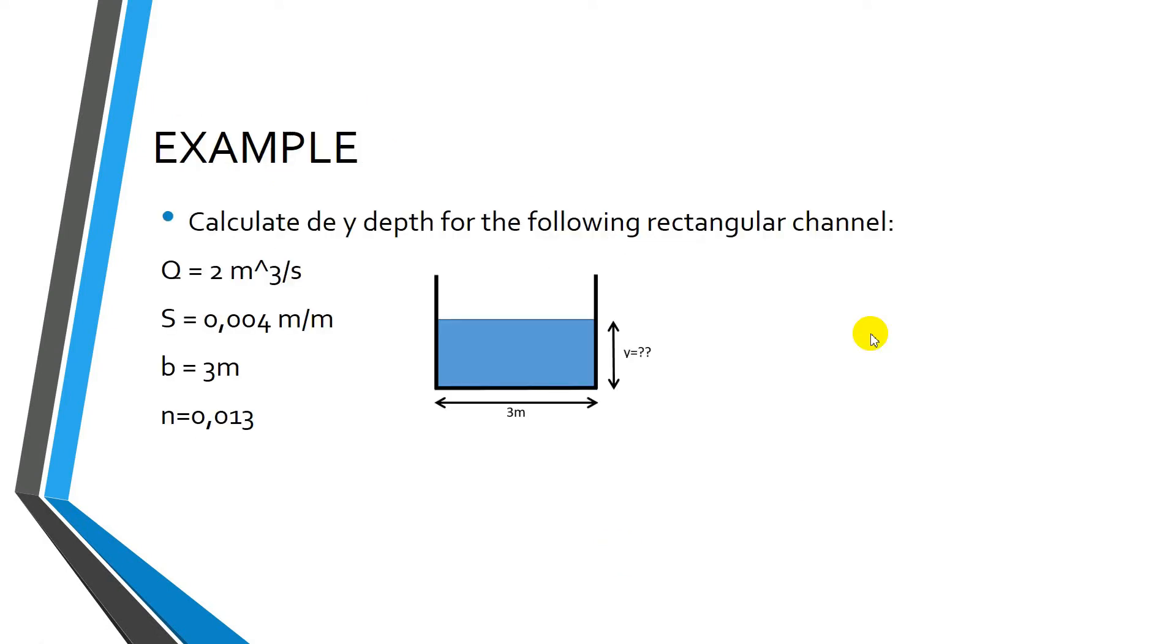Now, we will solve an example. We need to calculate the wide depth for the following rectangular channel, and we have the following information. We have discharge of 2 cubic meters per second, and a certain slope. B is the width of the channel, and n is the roughness coefficient. Well, let's begin.